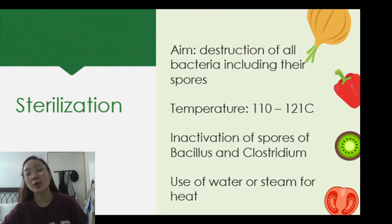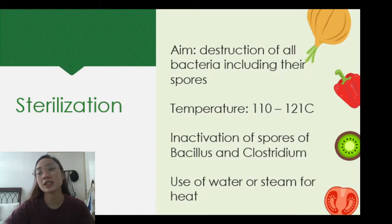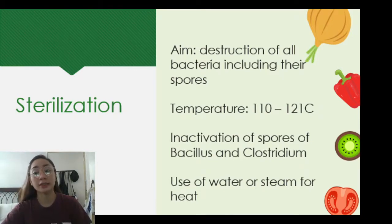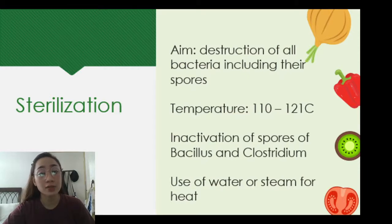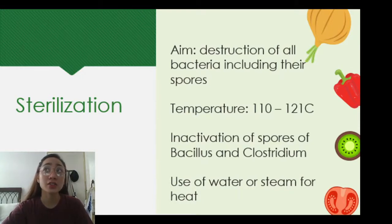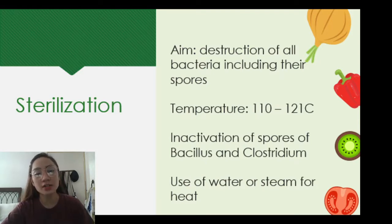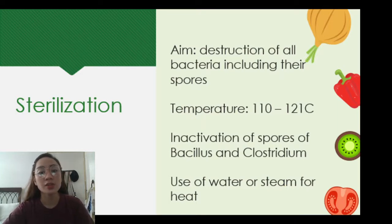The temperature required for sterilization is 110 to 121 degrees Celsius. It was already established in your reading why those temperatures are the basis for sterilization — it's to inactivate the spores of Bacillus and Clostridium, which are one of the reasons for food poisoning. In the sterilization process, there are two methods, or sometimes a combination of the two, and we use water or steam as the source of heat.